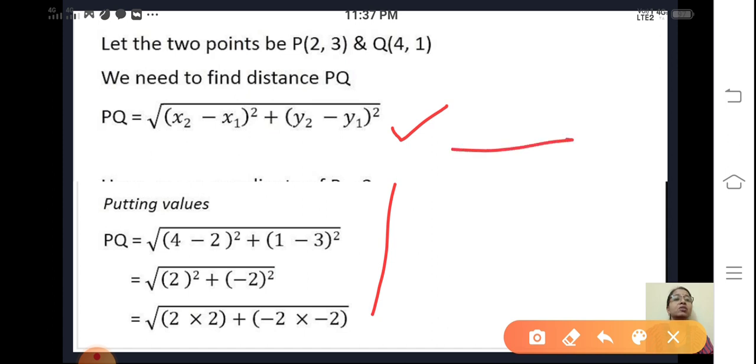This is square root of 2 into 2 is 4 plus minus 2 into minus 2 is again 4. So this is square root of 8 and the answer is 2 root 2. 8 can be split up as 4 into 2. Square root of 4 is 2. So 2 root 2 units.